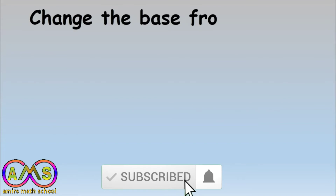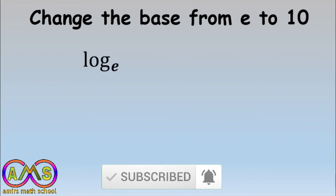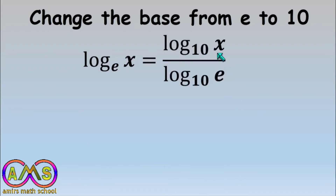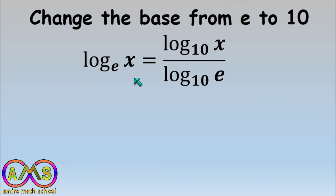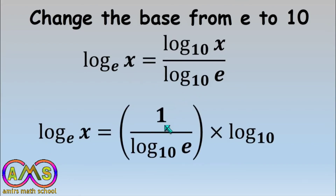To derive the formula we have to change the base of the logarithm from e to 10. That is: log base e of x equals log base 10 of x divided by log base 10 of e. Here we just convert log base e of x to base 10. So we write: log base e of x equals (1 divided by log base 10 of e) times log base 10 of x.